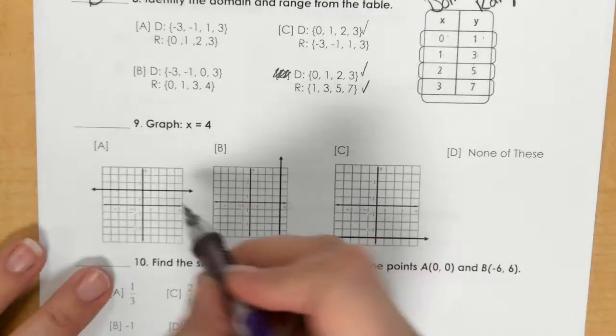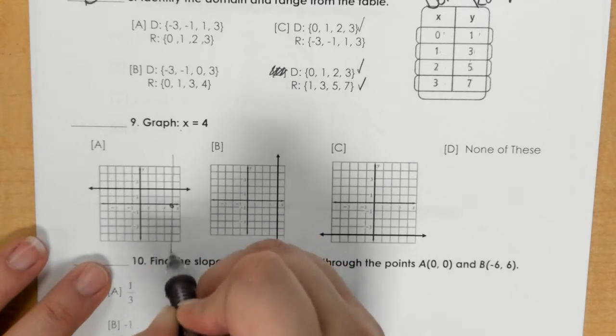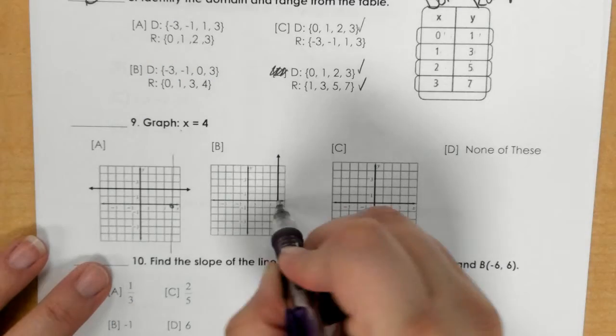And then for number 9 I need to go to the x-axis at positive 4 and draw a line up and down, so that would have to be B.